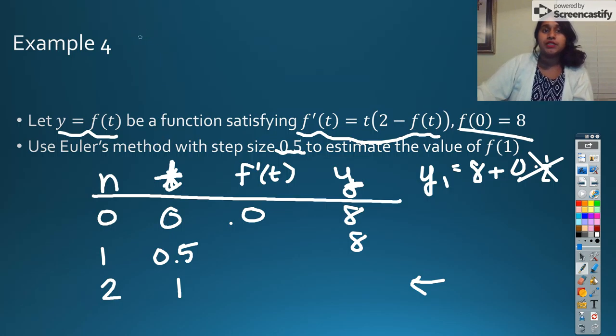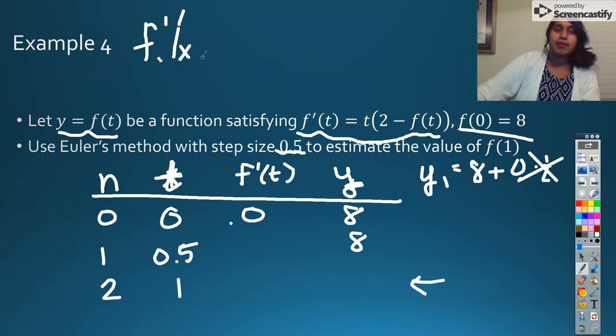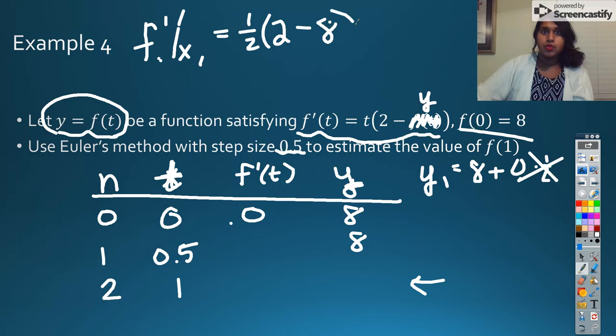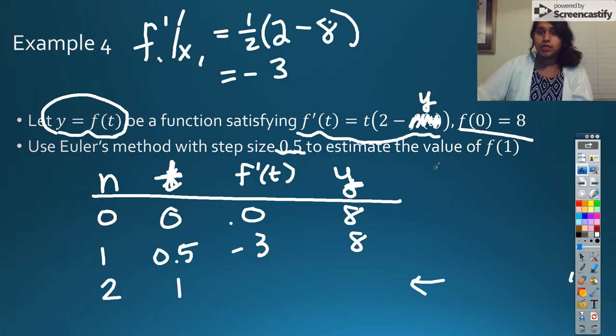So to figure that out, we need to evaluate f prime at my x1 value. I want you to recognize that that is actually y, because they gave us this information right here. So that's going to be equal to my x1, so what was it, one half times 2 minus my y value at that point, which is 8. So 2 minus 6 is negative 6. Negative 6 over 2 is the same as saying negative 3. So then we finish off our question one last time.